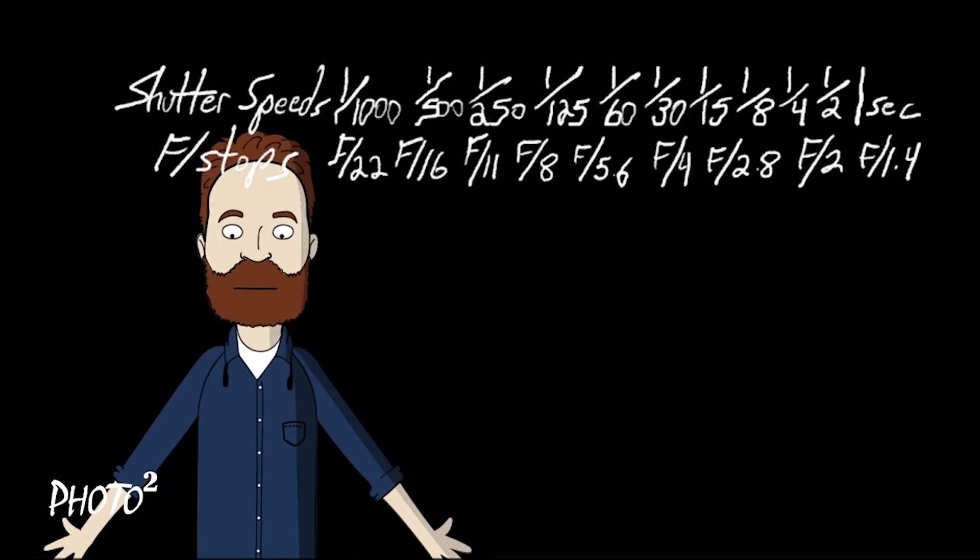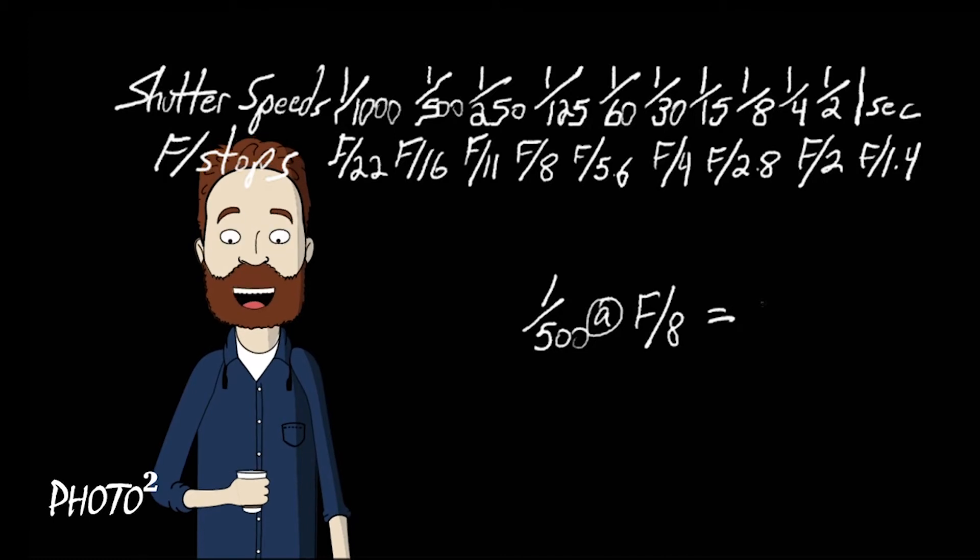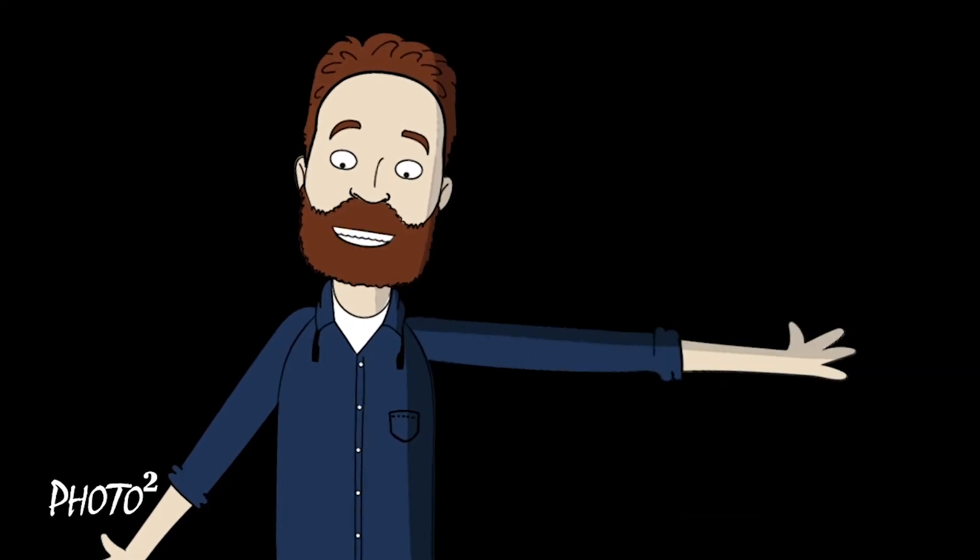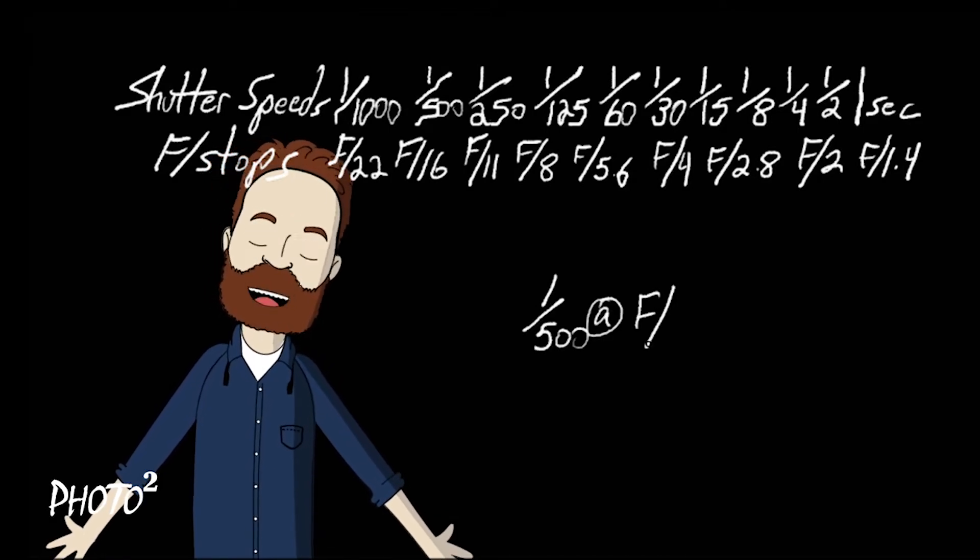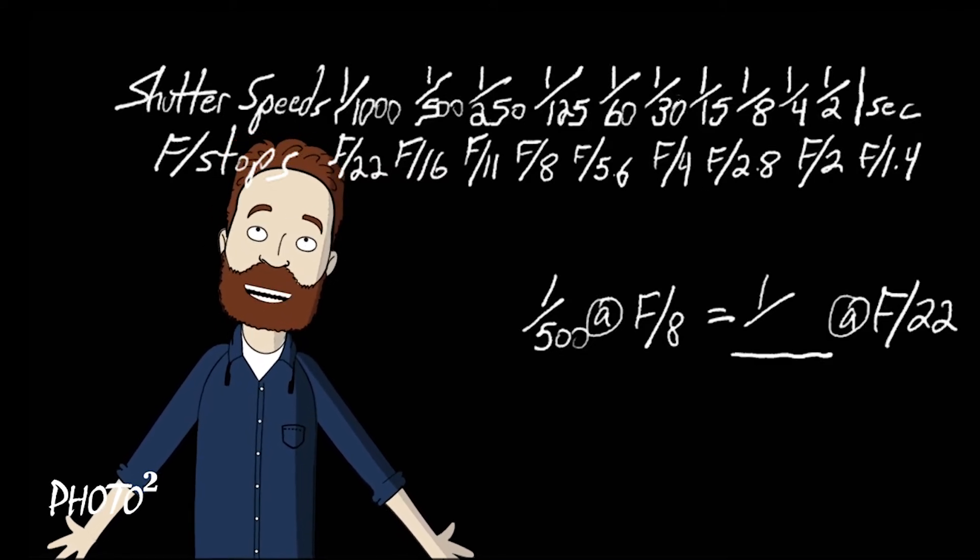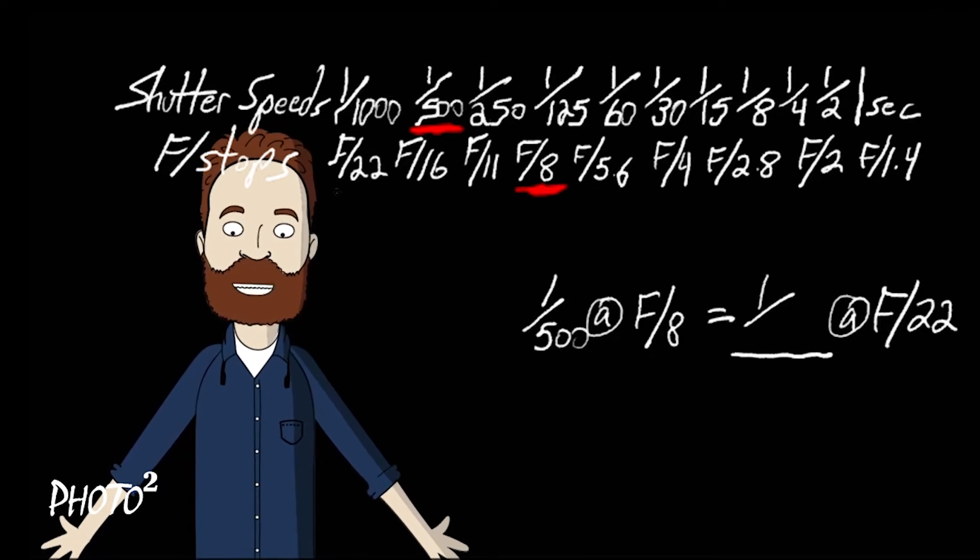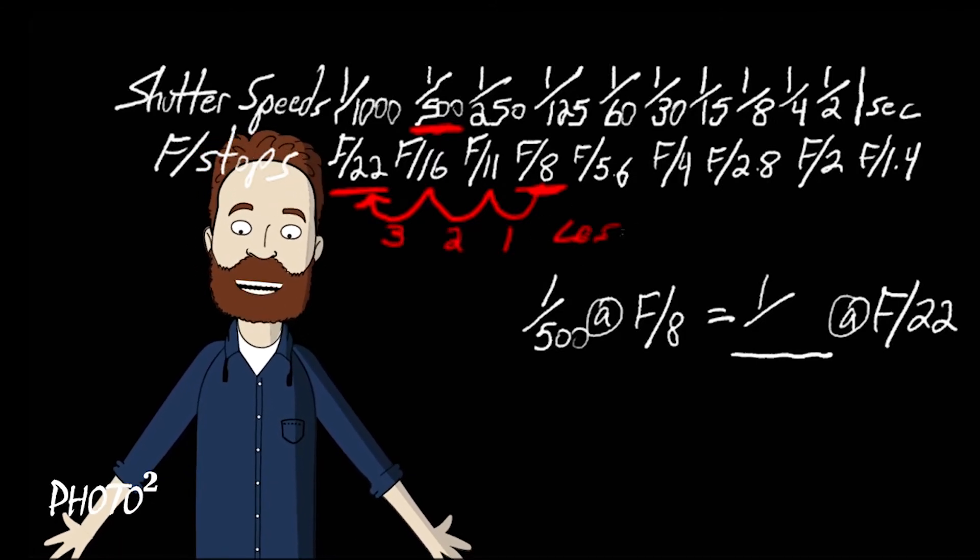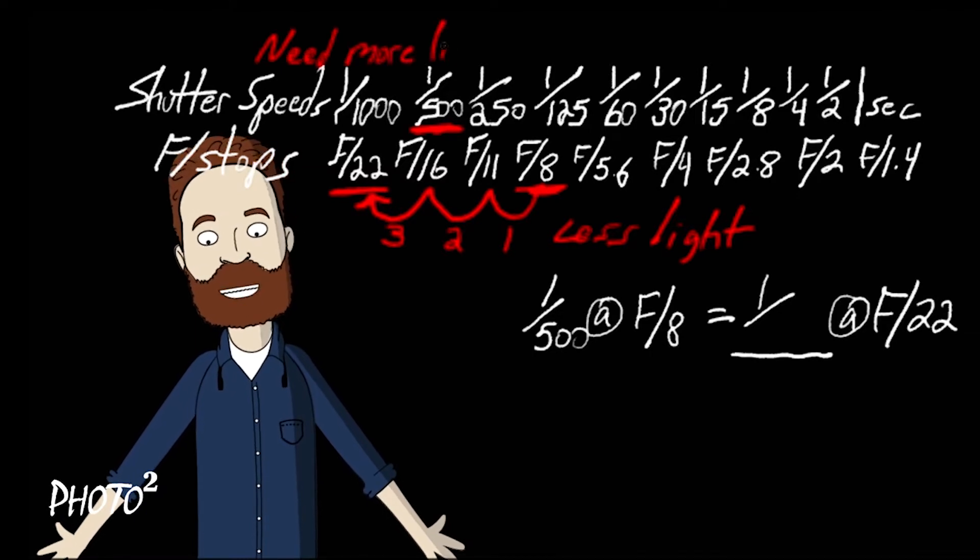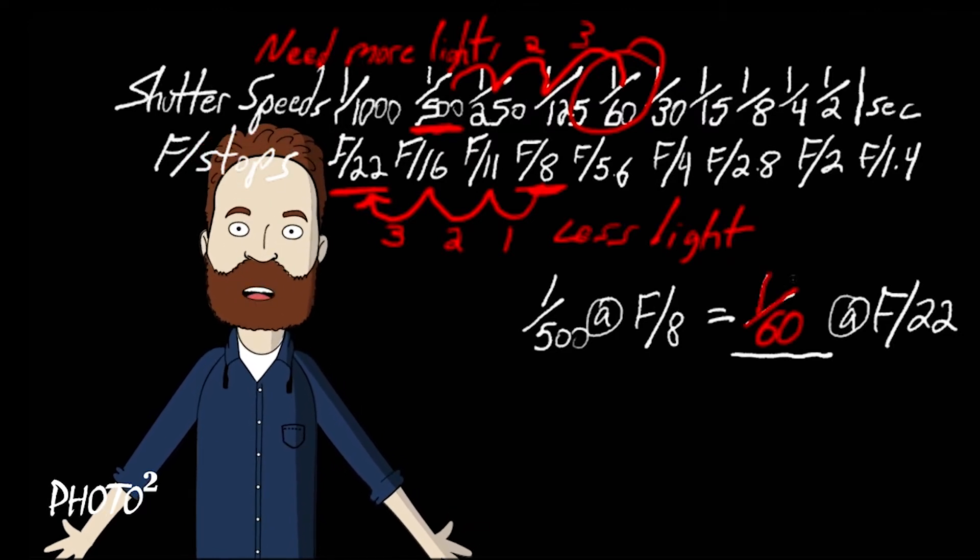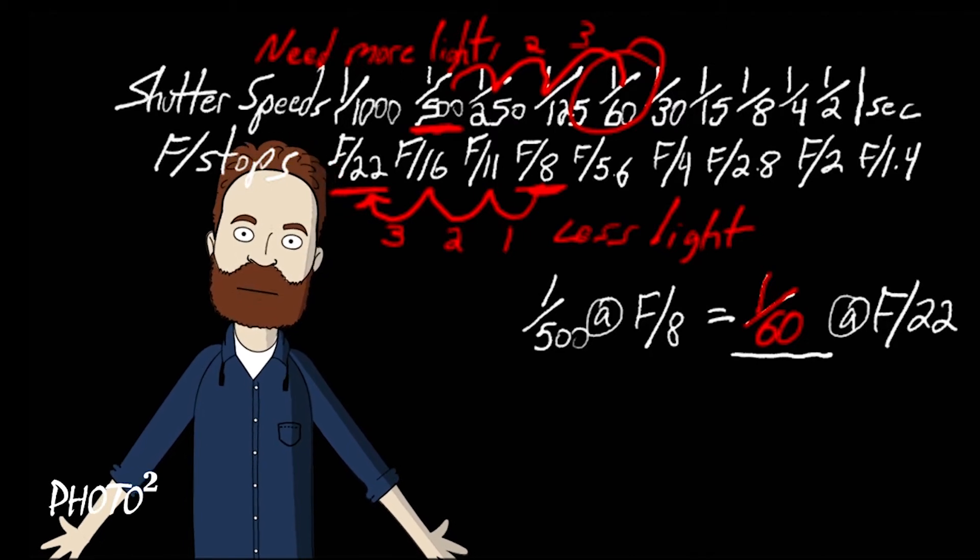Now let's work on some law of reciprocity problems. Let's start with something like one five-hundredth at f/8, that's middle of the road. And let's say we want to shoot something with maximum depth of field at f/22. So let's figure it out. We start at a five-hundredth at f/8 and we're moving to f/22. Count the stops: one, two, three stops over towards less light, so we need three stops more light. So we're at five-hundredth, let's go towards our more light, that comes to a sixtieth of a second. So one sixtieth at f/22 is the same exposure as the first equation, but I controlled what's in focus.